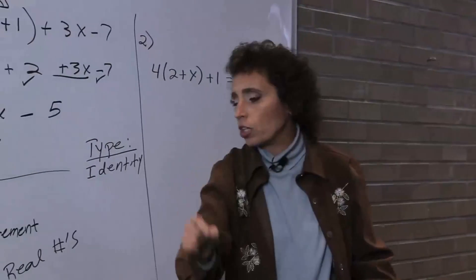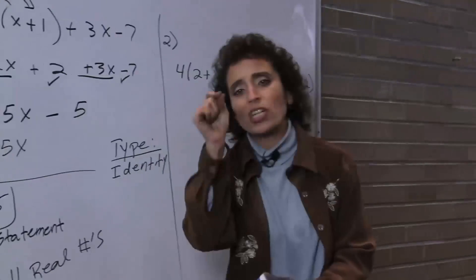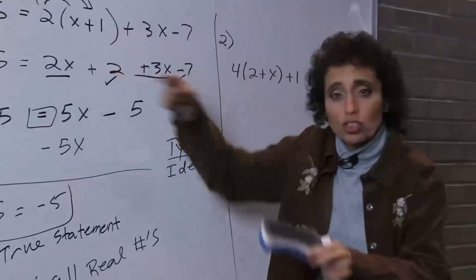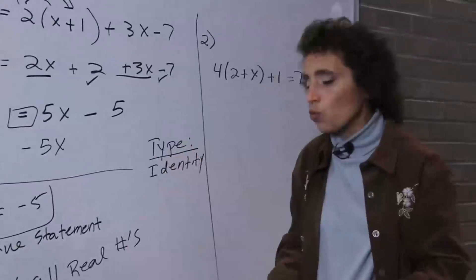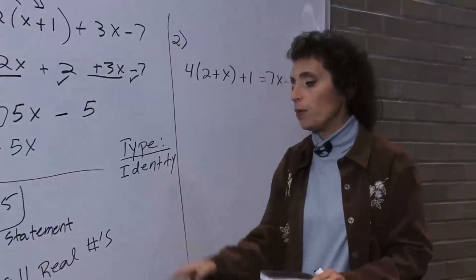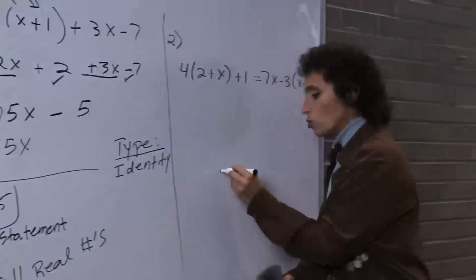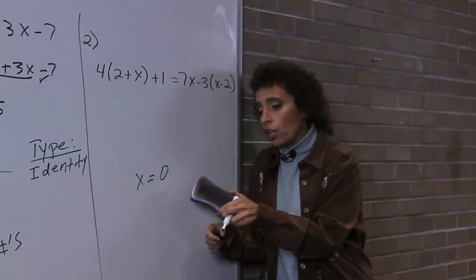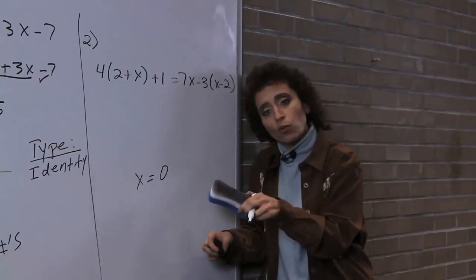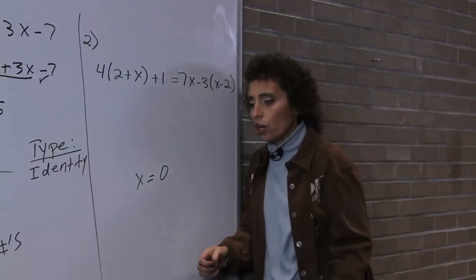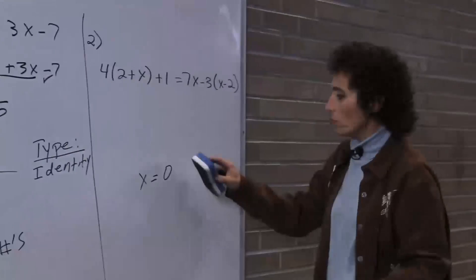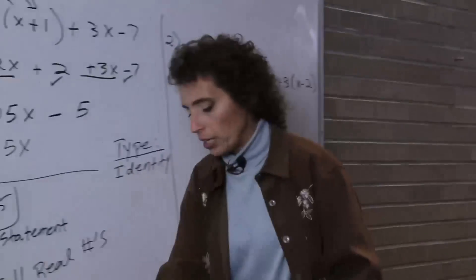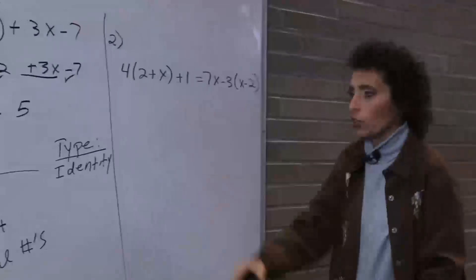An identity means this will always be true, forever. The answer is all real numbers. The symbol for all real numbers is a big script R. If somebody asks what type of equation this is, the answer is identity. When somebody says what solves this, the answer is all real numbers — any real number I want. The type is an identity, but the answer is all real numbers. In that last equation we did, x equals 0 — the variable did not drop out — so that was a conditional. Know the difference between type and solution.